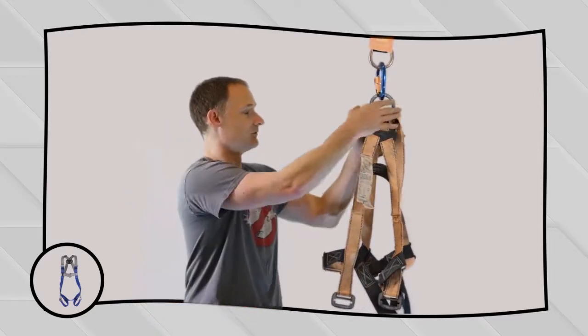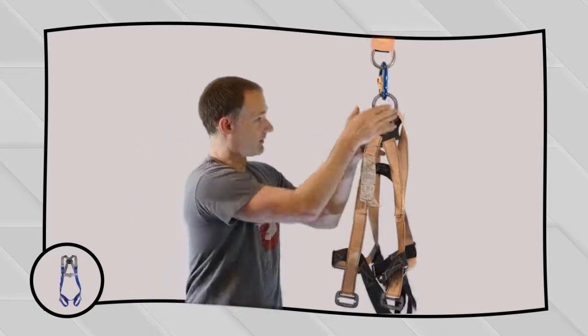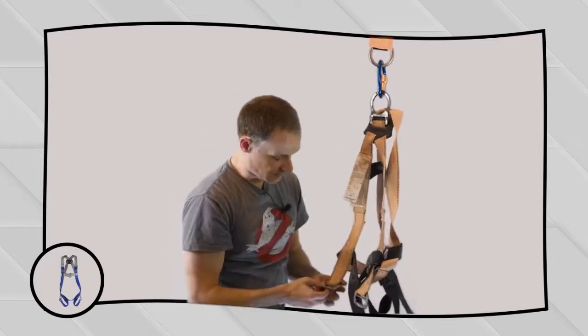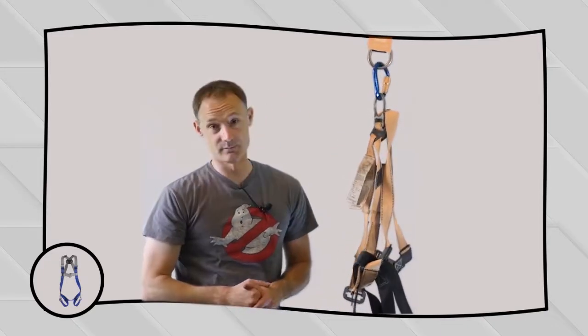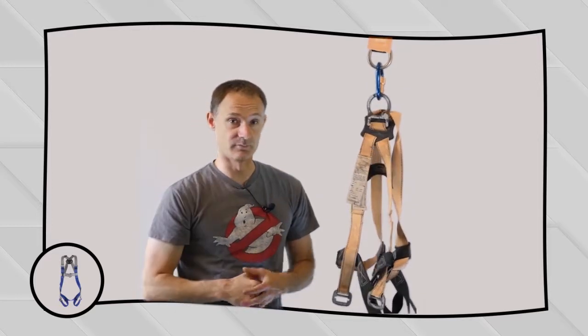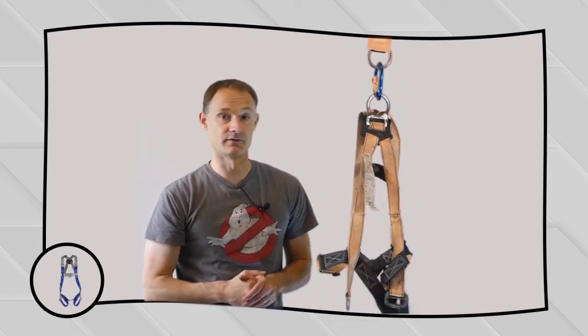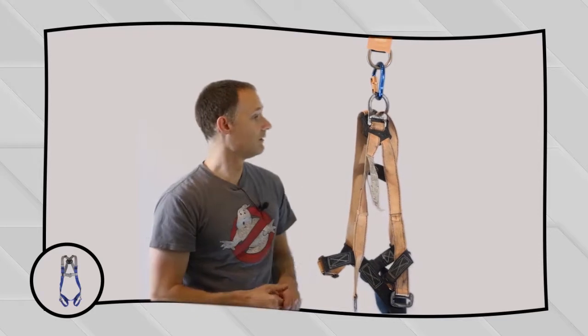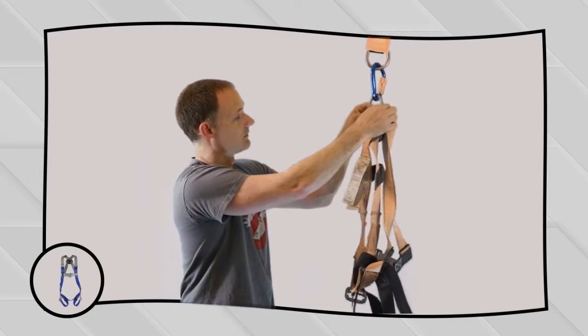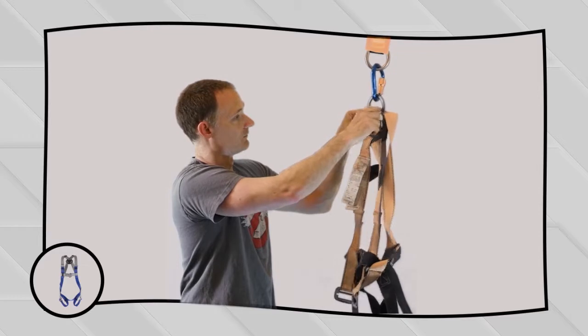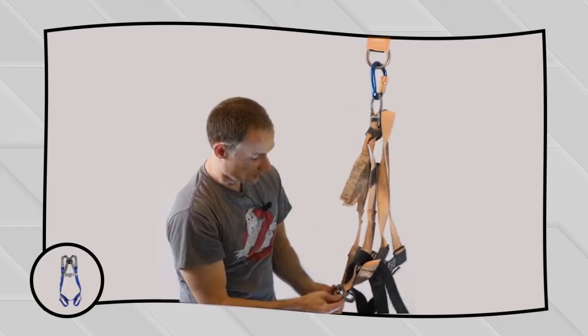Now check the hardware to make sure that it can move freely. I'm going to check the D-ring, check the buckles here. Now if you're using tongue buckles, you want to make sure that the tongue buckles, that the straps can move through the tongue buckle freely and that the grommets aren't out of round or damaged in any way. So take a look at all the hardware components and just make sure they're in good condition and that there's no distortions on any of the components.